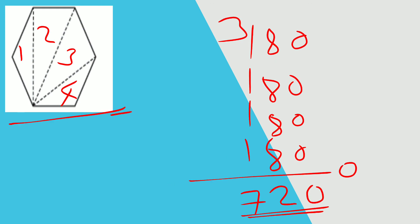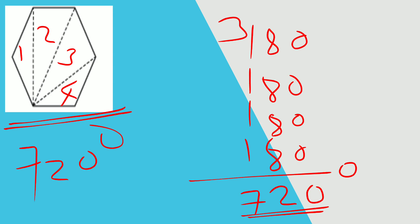The sum of all angles of a hexagon is 720 degrees. You can draw any polygon, cut it into different triangular sections, and measure all the angles of the polygon to find the total angle sum.